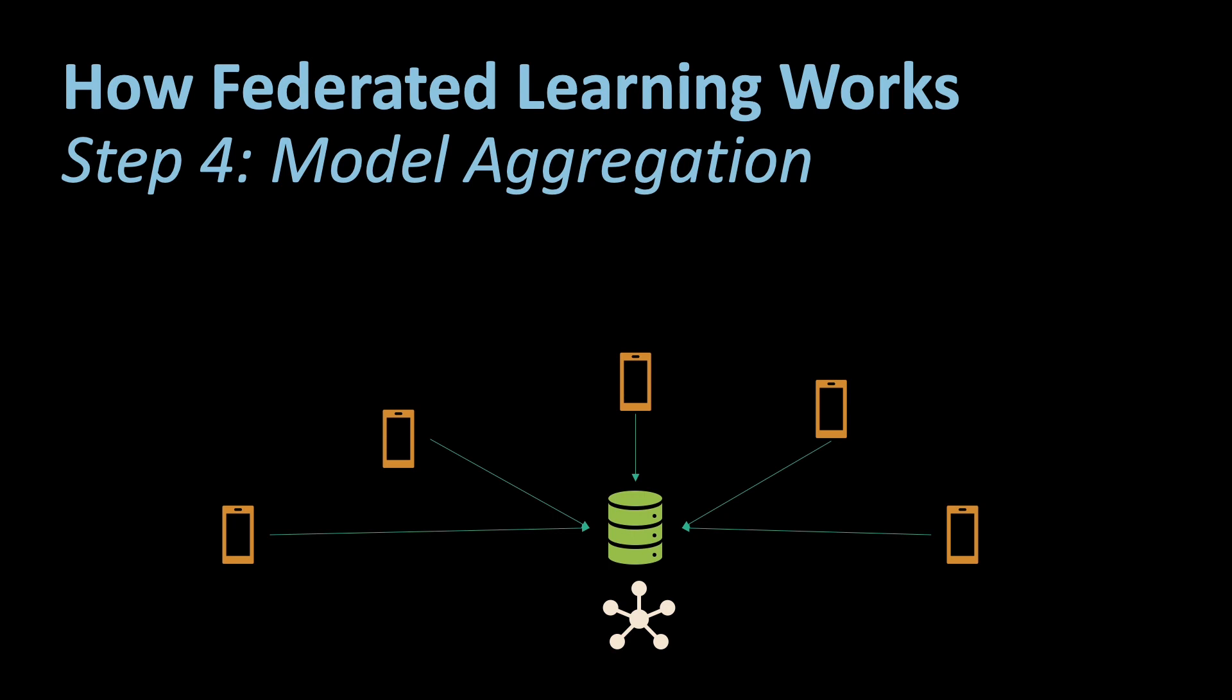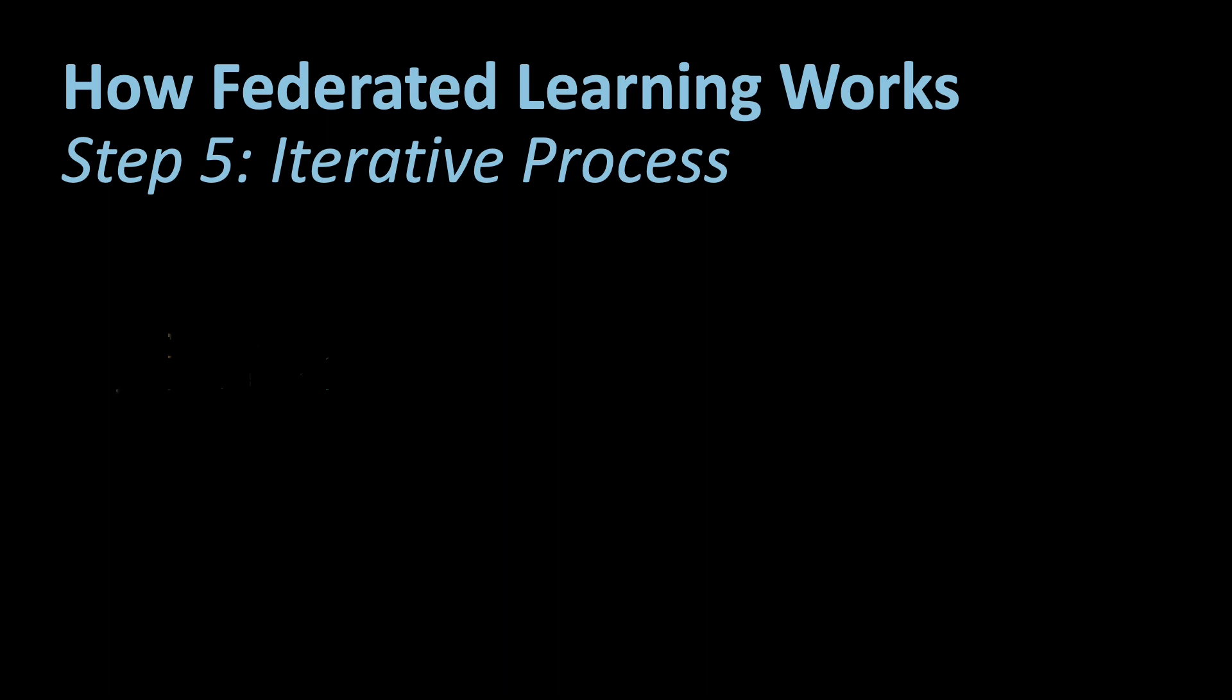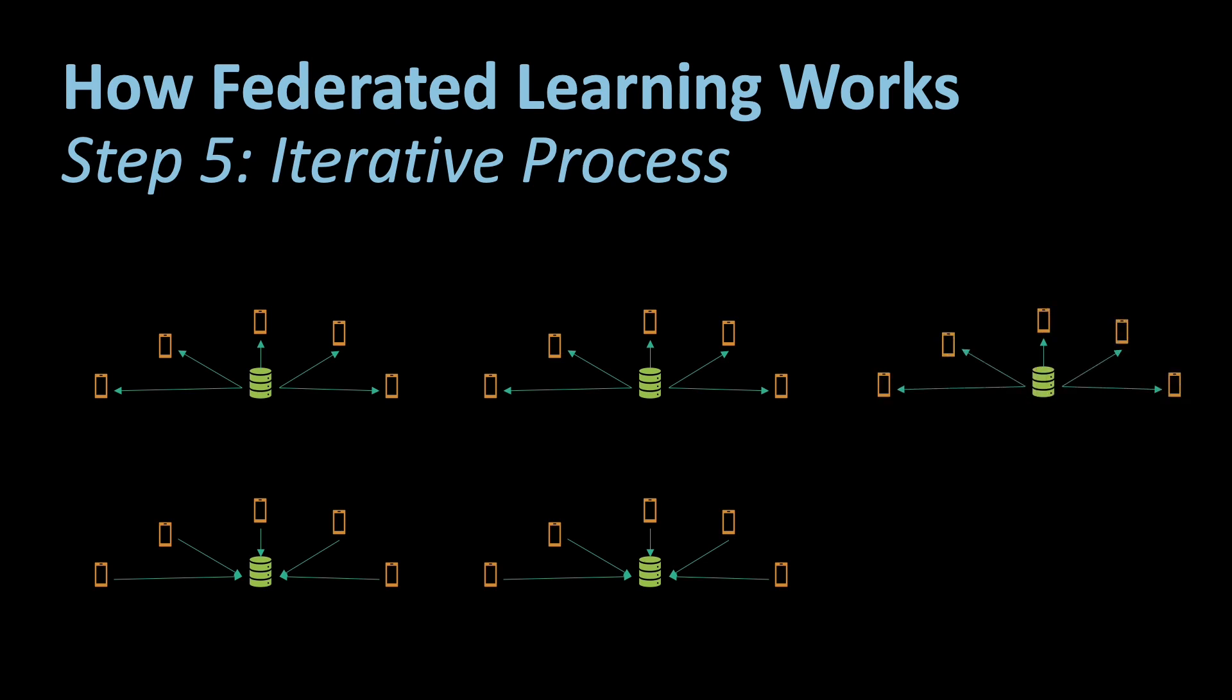As I've said, this whole thing and basically the fifth step is that it's an iterative process. The process of local training and model aggregation is repeated iteratively. With each iteration the global model becomes more refined and accurate while preserving privacy.